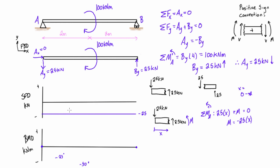This makes sense because if we take the area of the shear force diagram, that becomes the change in magnitude of the bending moment diagram. For the first half, we have a height of 25 times a base of 2, so 25 times 2, and it's on the negative side — that gives us negative 50, which checks out.